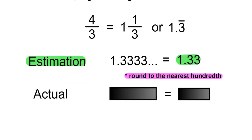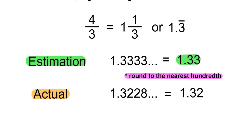The actual square root of 14 over 8 will give us an answer of 1.3228, and so on. Round this to the nearest hundredth, and we will get 1.32. Our estimation was 1.33, and the actual was 1.32, so our estimation was very good.